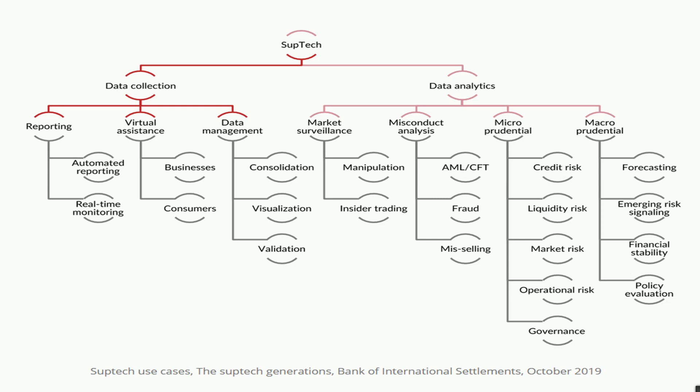Data management involves consolidation of data across entities or across different departments, so supervisors can see an overview of how different entities are placed and their combined contribution to economic activities within the industry. Visualization tools allow regulators to view all received data at a glance through a consolidated dashboard, rather than opening multiple files.